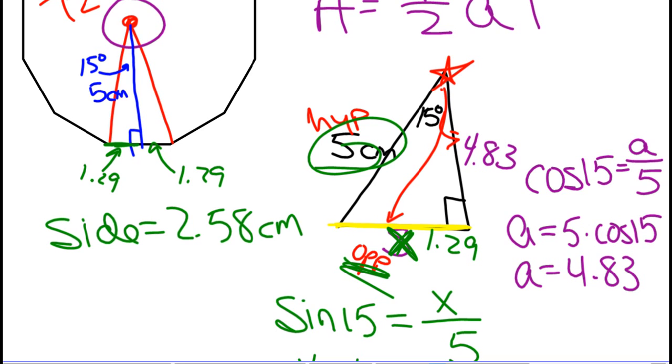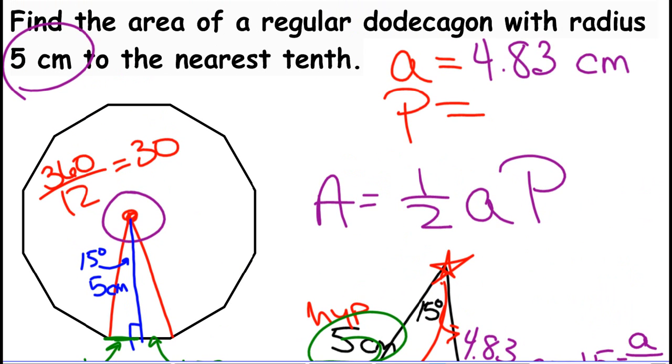Now, what does that do for me? Helps me find my perimeter, right? To find my perimeter. To find my perimeter. Sean, I haven't heard from you. To find my perimeter, what do I need to do with that 2.58? Multiply it by the number of sides, and I have how many sides? 12. Right? So my perimeter is going to be a 12 times 2.58. So it will equal, what was it? 30.96. Okay. 30.96 centimeters. Right?